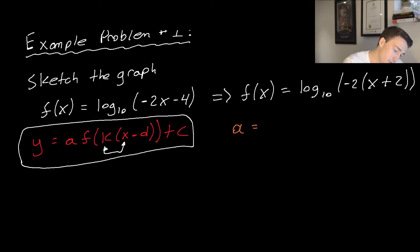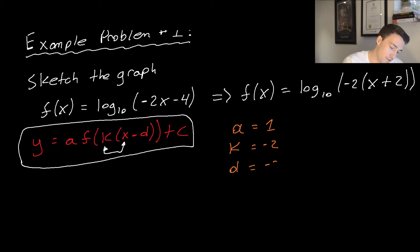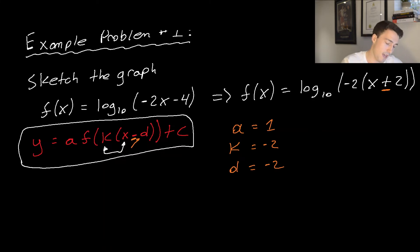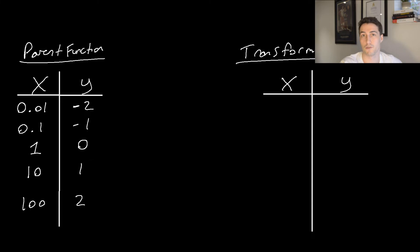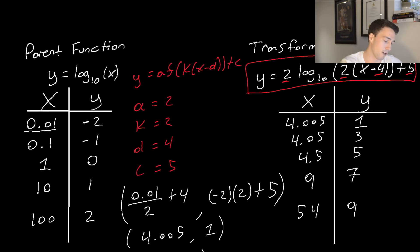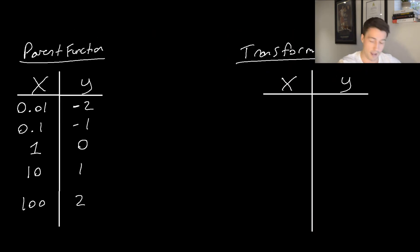Once we have that form, we pull out the parameters. a = 1. The k value is negative 2, and that negative represents a reflection in the y-axis. Then d equals negative 2, because we have plus 2 inside — a positive inside means a horizontal shift to the left. Finally c = 0 because there's no vertical translation. Now to apply the mapping rule we look at the parent points of y = log base 10 of x.